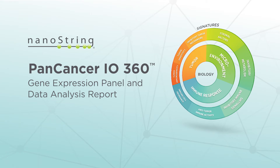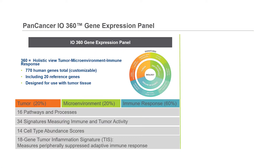Analyzing your gene expression data has never been easier. NanoString's new data analysis reports are designed to work with specific products, including the Encounter PanCancer IO360 Gene Expression Panel. This panel is designed to profile the tumor-immune interaction within the tumor microenvironment, including mechanisms of immune evasion used by tumors. The genes are selected with a bias to clinical relevance, making them ideal for clinical studies and biomarker development.